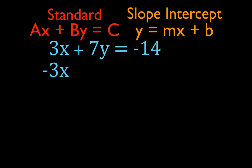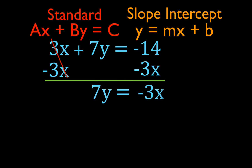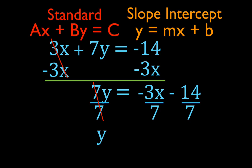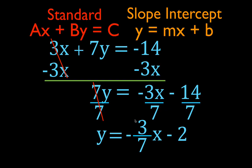Add the opposite of the x-term. The x-term is 3x, so the opposite is minus 3x. The 3x's cancel, leaving 7y equals minus 3x minus 14. Step 2: divide by what is in front of the y, which is 7. 7y divided by 7 is y. Minus 3x divided by 7 leaves minus 3-sevenths x. And minus 14 divided by 7 is minus 2. That is the equation in slope-intercept form: y equals minus 3-sevenths x minus 2. The slope is minus 3-sevenths and b is minus 2. Don't forget your negative signs.